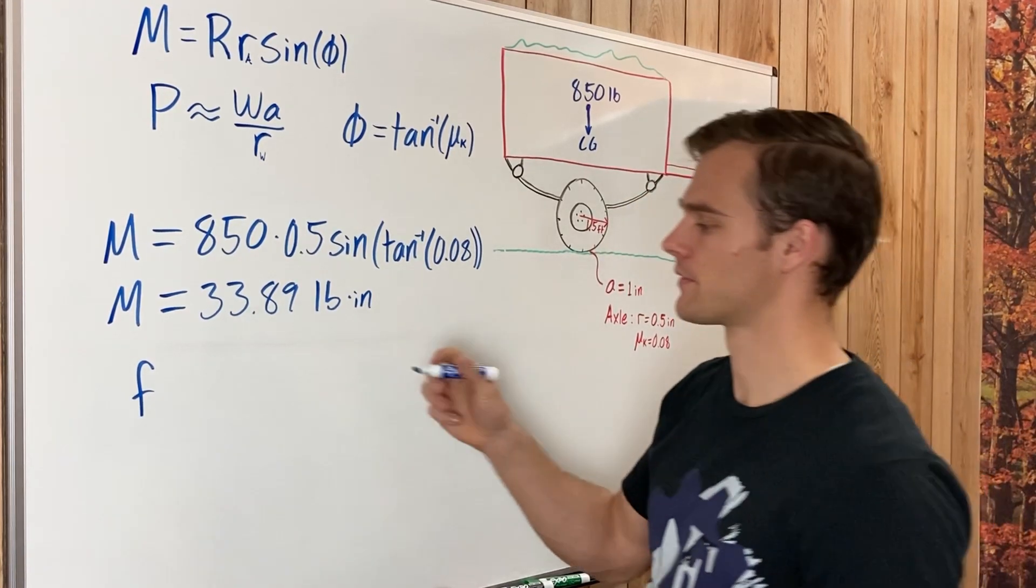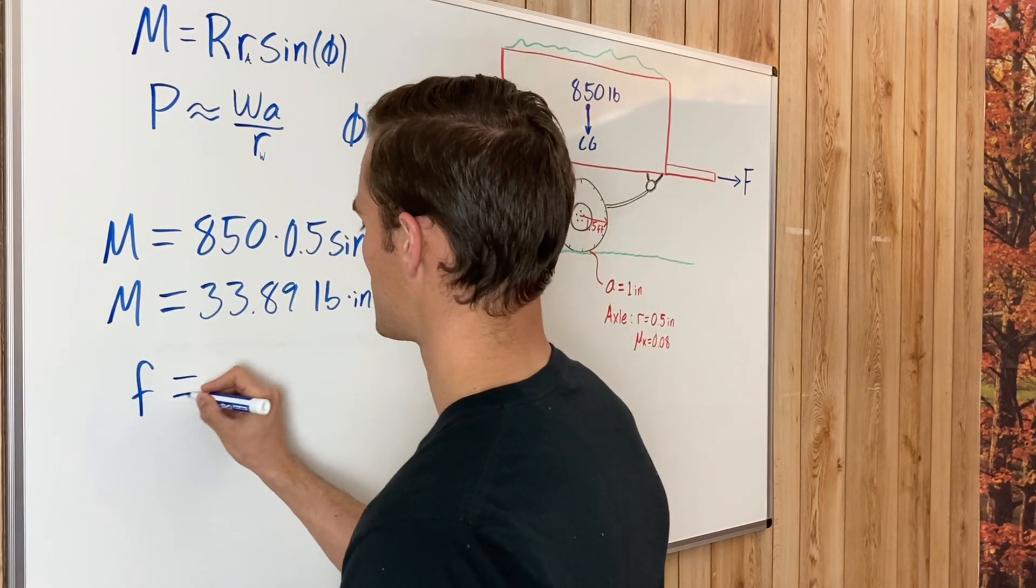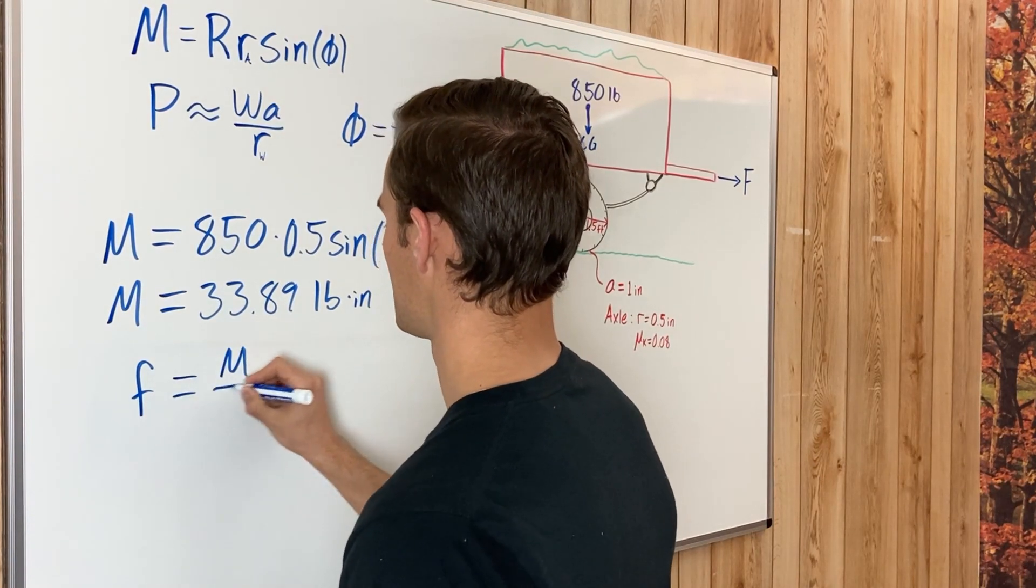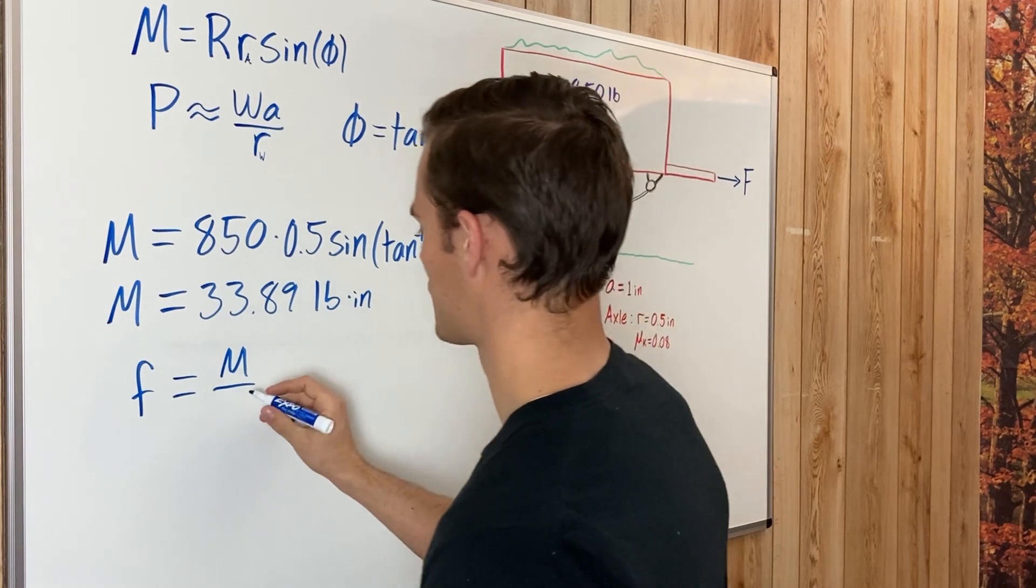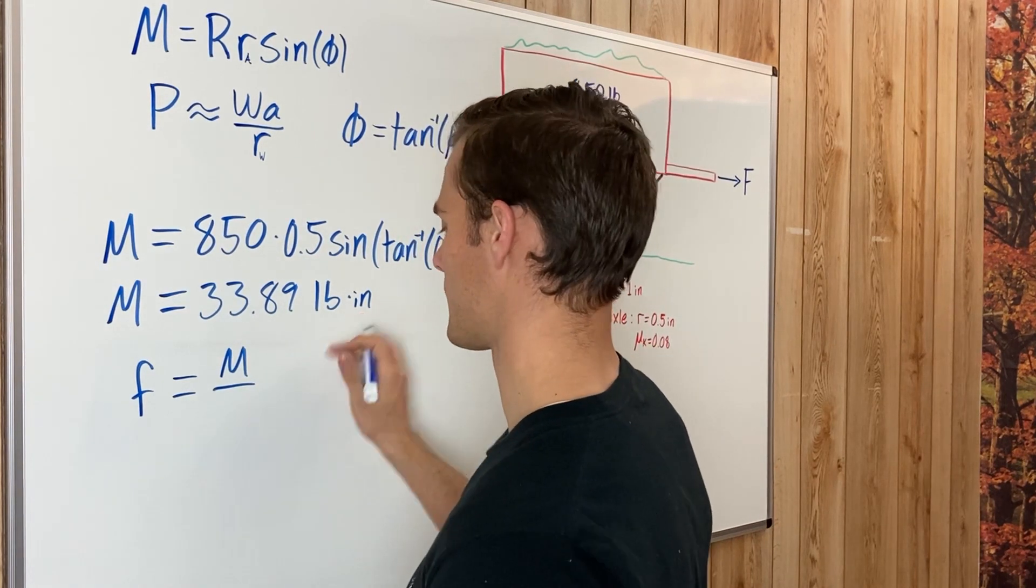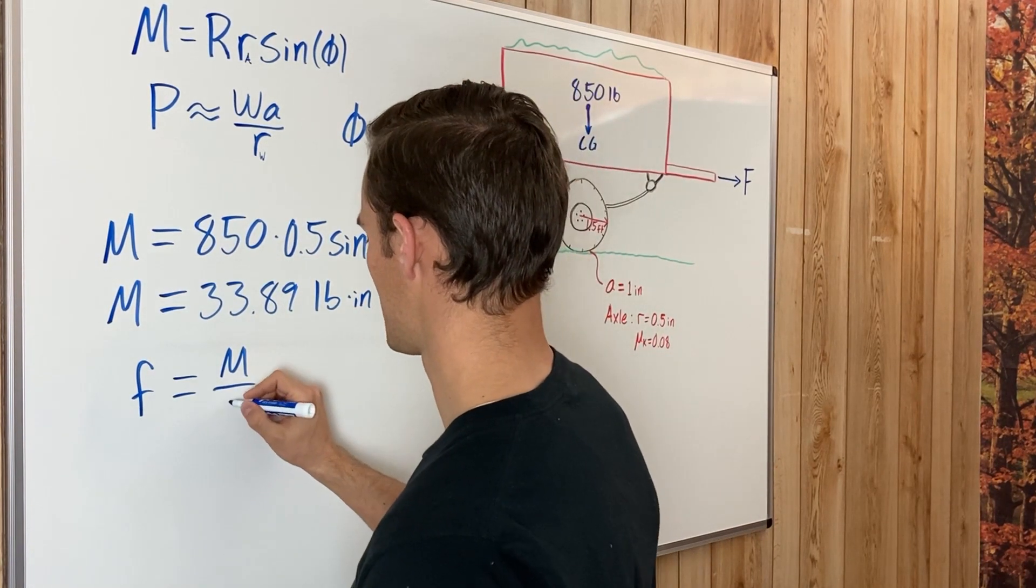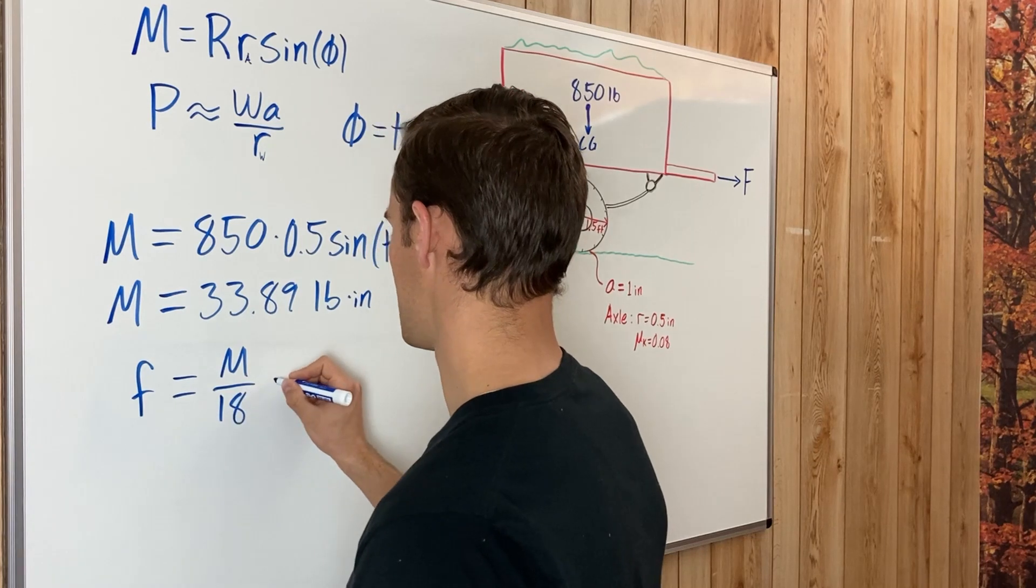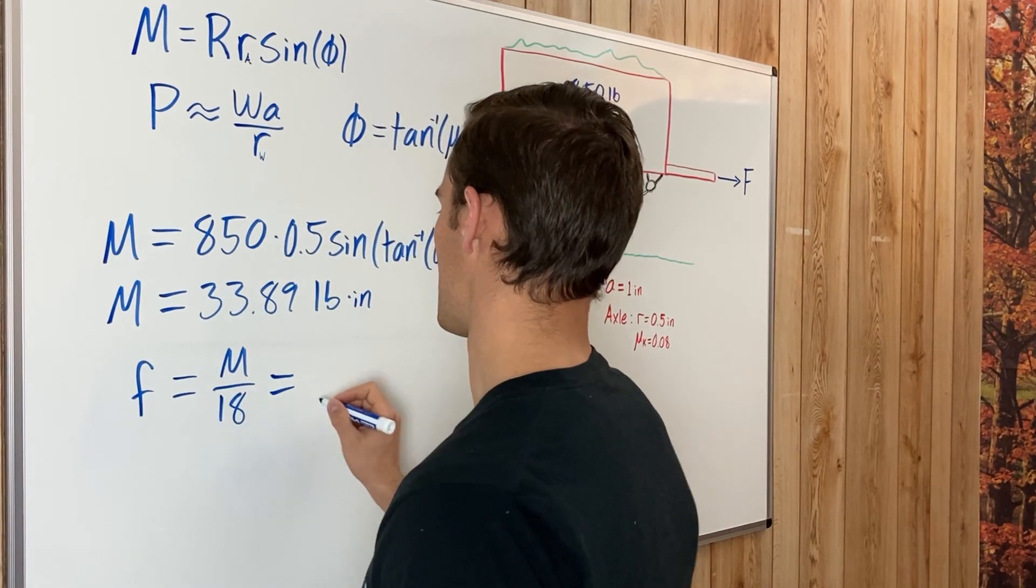So this force that we need is M divided by one and a half feet, which we will convert into inches. Our moment is in pound inches, so divided by 18. Plug that into your calculator and you get 1.88 pounds.